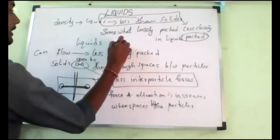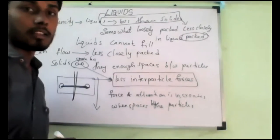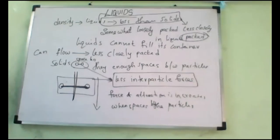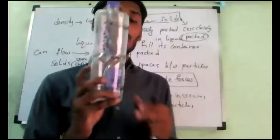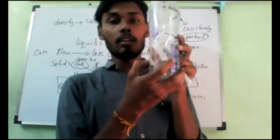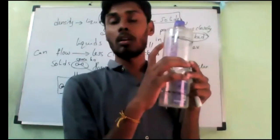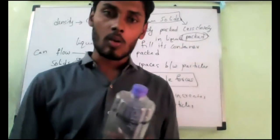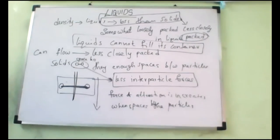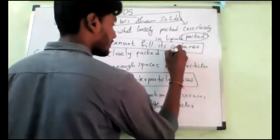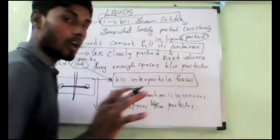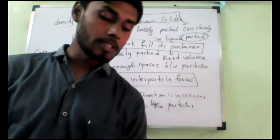That is what you should remember — liquids cannot fill their container. Suppose I fill water till here: it will not automatically occupy the full bottle. Water will be till here only. The remaining space they cannot occupy by themselves. That is why these liquids cannot fill their container. So that is why we can say they have a fixed volume — not a fixed shape. This is all about the properties of liquids.